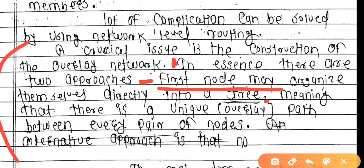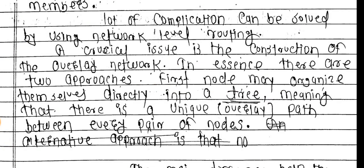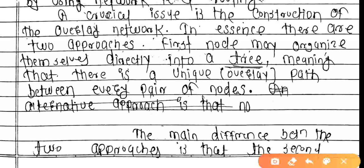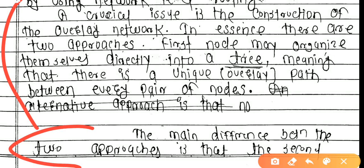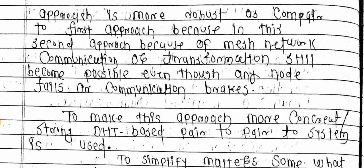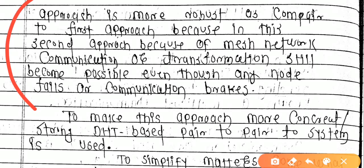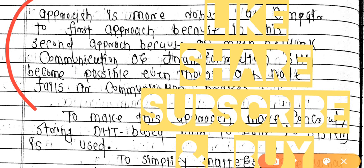In the tree approach, there is a unique overlay path between every pair of nodes. The main difference between the two approaches is that the second approach — the mesh network approach — is more robust compared to the first. Because of the mesh network, communication and data transmission are still possible even if any node fails or communication breaks.